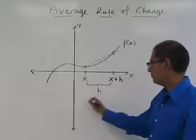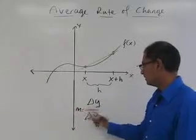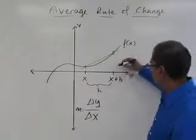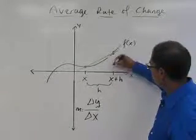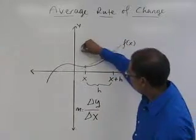So remember that's the change in y, that slope is the change in y over change in x. So let's see what these are. The change in y. Well, my x values are x and x plus h. And so what are y values that they correspond to?